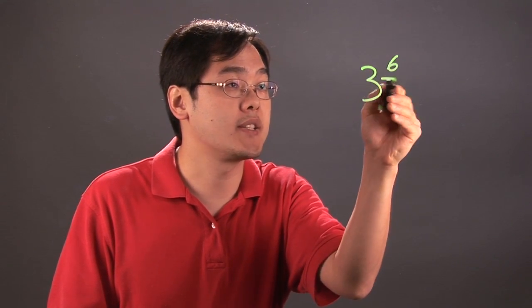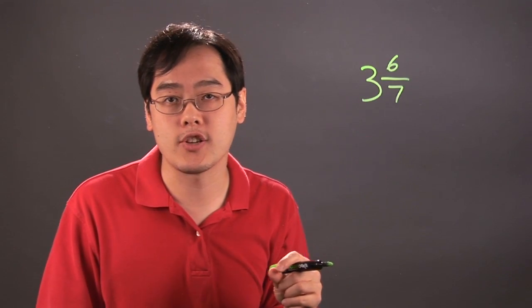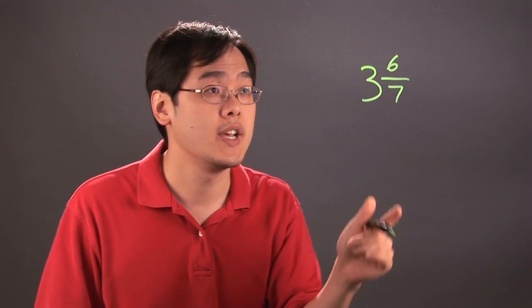So for example, if you have 3 and 6 sevenths, what you have to do first is convert it to an improper fraction first and then go from there.